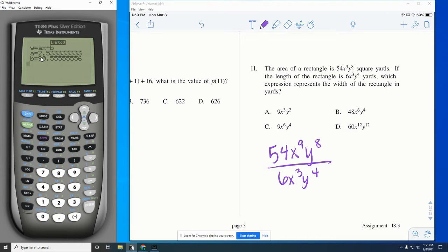This is not on your formula chart, like the setup for it. The exponents part is on your formula chart, but area equals length times width. So since we're trying to find width, we would divide both sides by length. So this is what we're really doing.